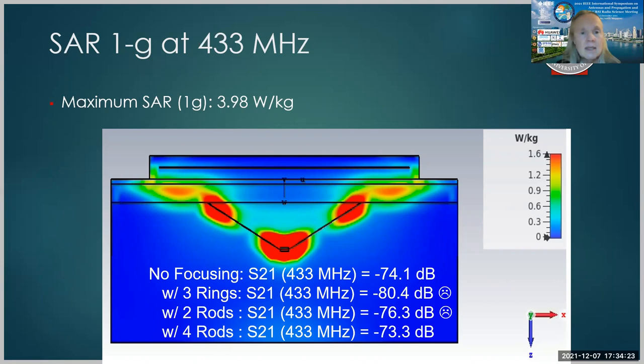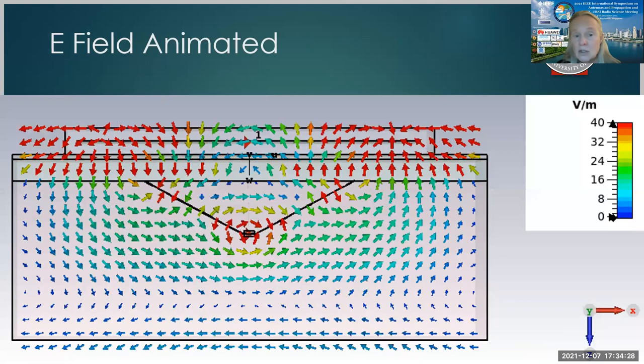And again, here are the electric fields, and we can see why they are certainly stronger. They are being concentrated by the rods, but they are not being picked up well by the coil.